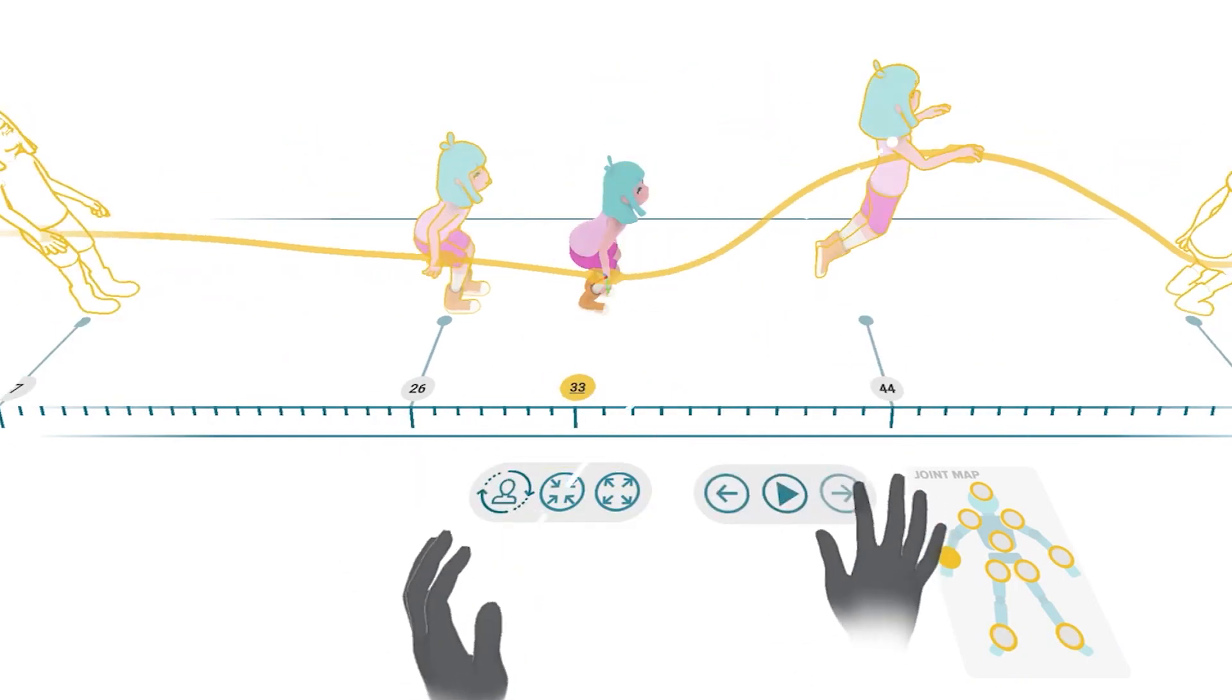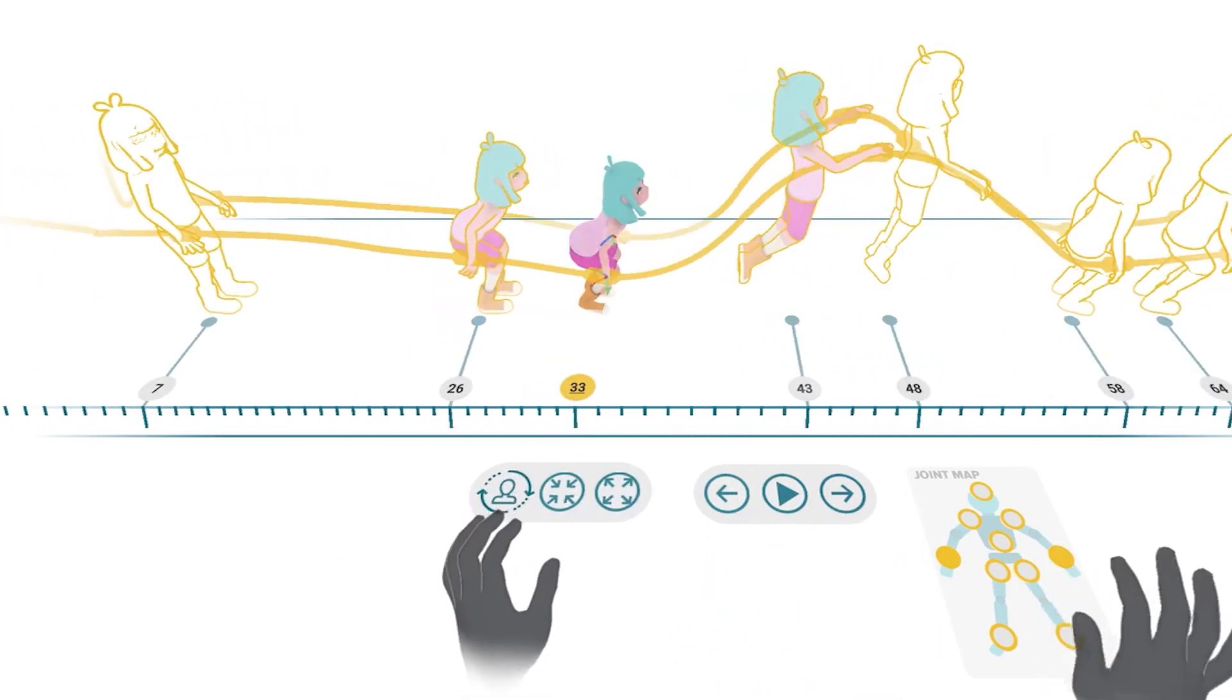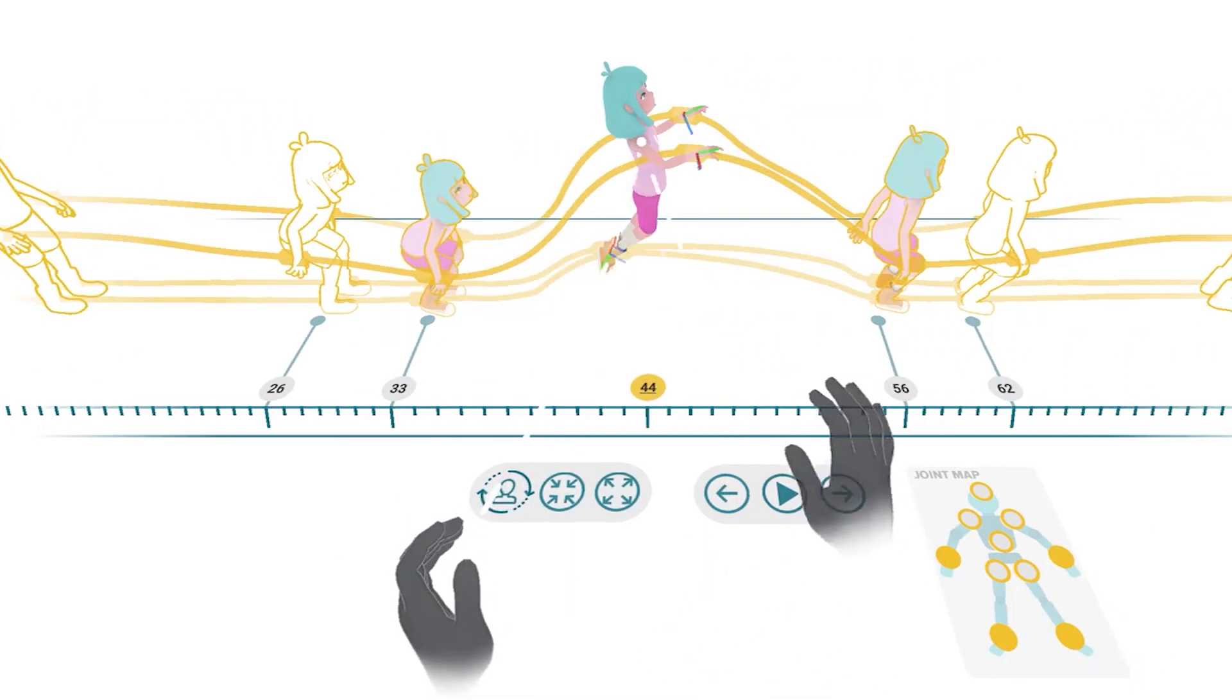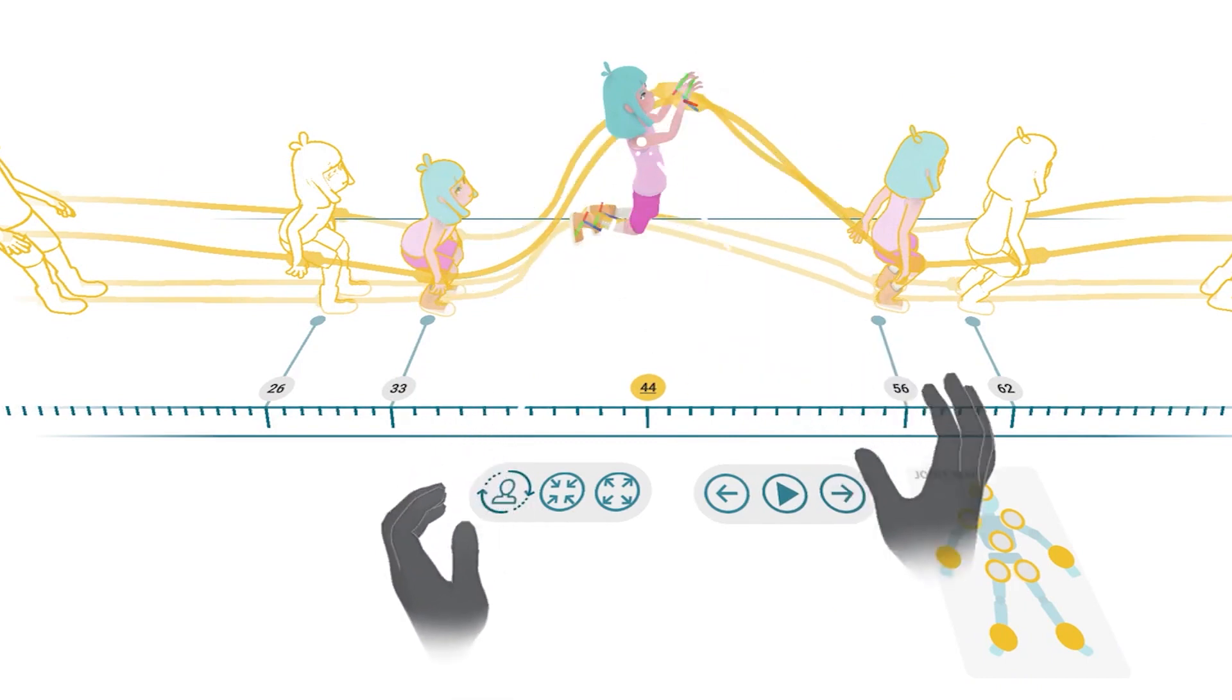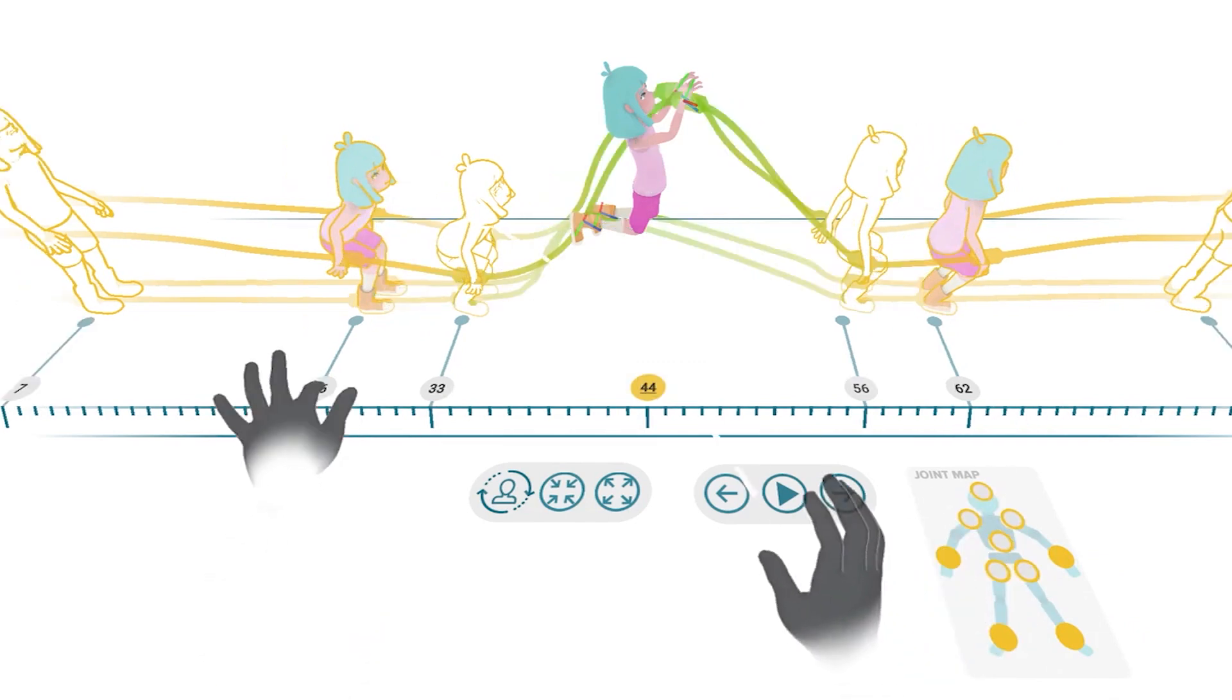The system also features controls for playback, rotation, and scaling. A joint map serves to show or hide different trajectories. One can select two keyposes and change your position in time and space to speed up or slow down parts of the animation.